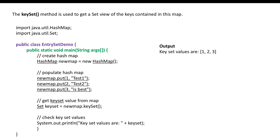Another concept in Map is key set. Key set basically gives you the list of keys present in the map. When you have a HashMap with data and call dot keySet() on it, you get a set of keys. Looking at the output, I get 1, 2, 3 because I'm calling keySet() and just printing it — you get all the keys. With this we are done with the collection framework — HashMap, HashTable, ArrayList, and Set.